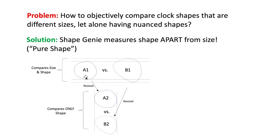For example, clock A1 is smaller than clock B1, but we can resize them to be the same width. In this way, we can measure their shapes apart from their size. This has been impossible if you measure things like area, perimeter, volume, etc.